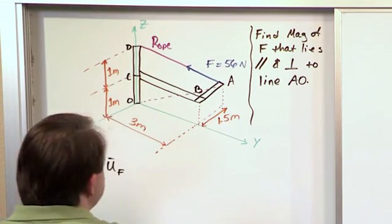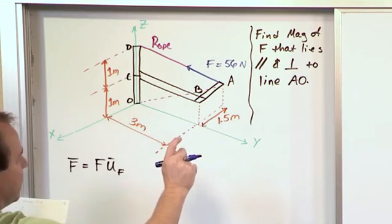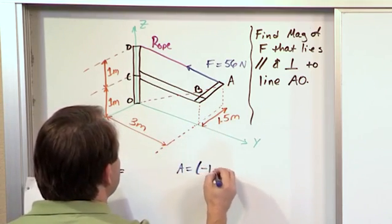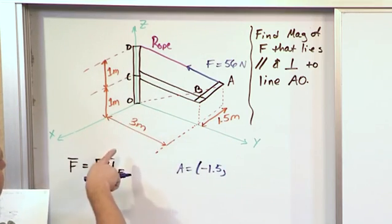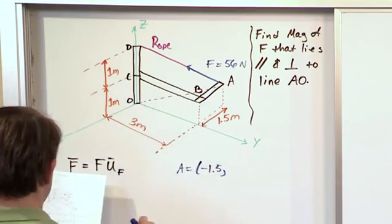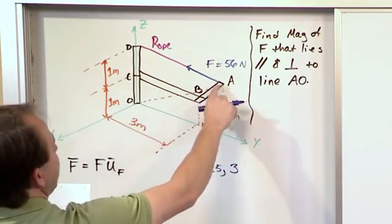Now, the point A, if you look here, if you look at the components of it, in the X direction, it's negative 1.5. In the Y direction, which will be this guy right here, it's 3. And the Z direction, we're going up. And if you look at the way everything's...